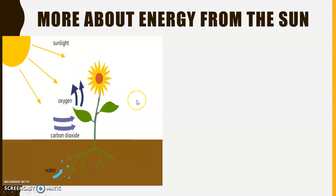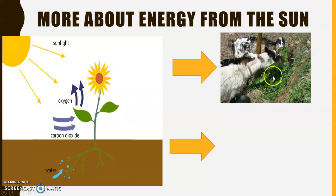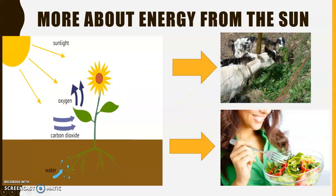Plants don't just give off oxygen — they also give food to animals. All the energy that the plant had in its leaves and roots goes to the body of the animal. And because human beings also eat plants, all the energy stored in the leaves and roots also goes to the body of the human being. Remember, we get all our energy from the food we eat.